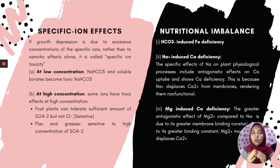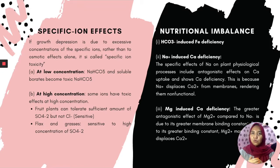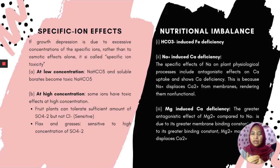The second effect is specific ion toxicity. If growth reduction is due to excessive concentration of a specific ion rather than osmotic effects alone, it is called specific ion toxicity. At low concentrations, ions such as HCO3⁻ and soluble borates can be toxic. At high concentrations, some ions also have toxic effects — for example, fruit plants can tolerate sufficient SO4²⁻ but not chloride, as they are sensitive to it. Grasses are sensitive to high concentrations of SO4²⁻.